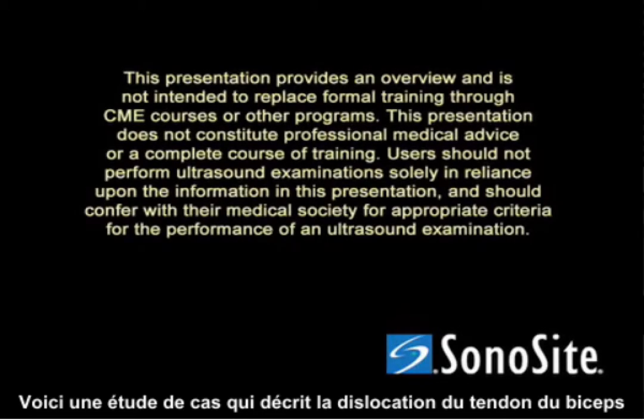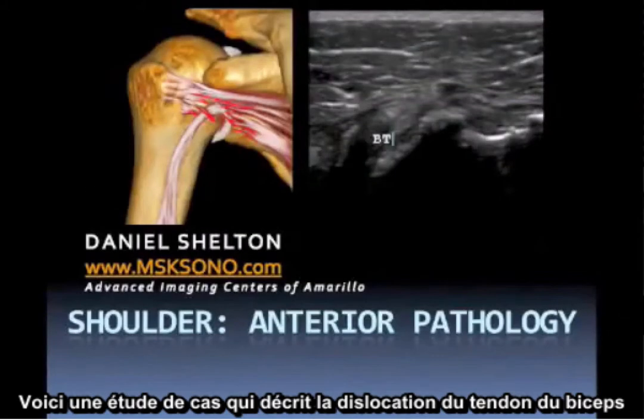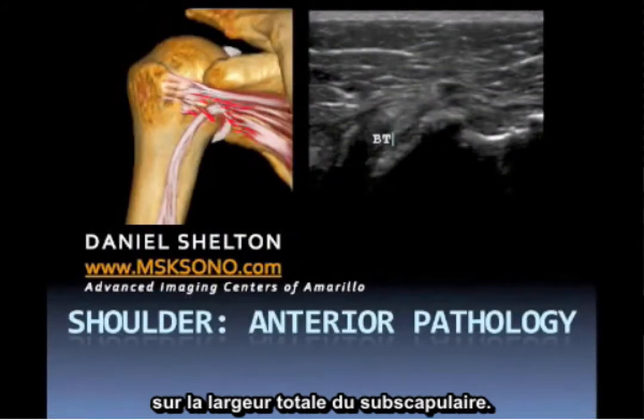This is a case study describing a dislocation of the bicep tendon as well as a full thickness tear of the subscapularis.